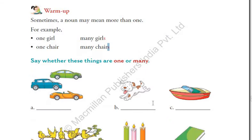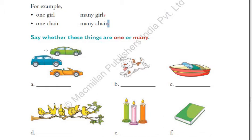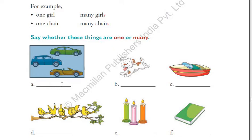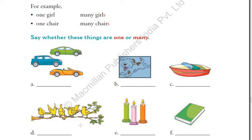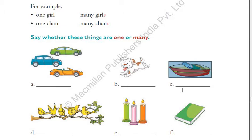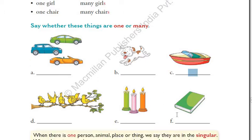Before exploring other methods, we went through the warm-up exercise where we solved a picture exercise. If in the picture we can see only one photo of something, we write 'one' in the blank. And if many, we write 'many.' We did the same thing with the car — in that picture, there are three cars, so we write 'many.' I also gave you homework to solve the remaining three pictures.